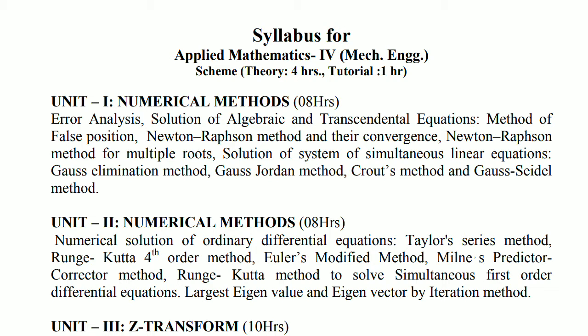Starting with unit number 1, Numerical Methods, this is having a weightage of 12 marks. Unit number 2, Numerical Methods again, it is having a weightage of 14 marks. So unit number 1 and 2 both constitute a total of 26 marks.